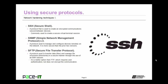First up is Secure Shell, or SSH. It's a protocol used to create an encrypted communications session between devices, commonly used to create a secure virtual terminal session. It should be used in place of Telnet whenever possible. Then there's SNMP version 3, Simple Network Management Protocol version 3. It's a protocol used to manage and configure devices remotely on the network, and it's more secure than the prior two versions because it supports encryption. Secure File Transfer Protocol, or SFTP, should always be used in place of FTP. It's a protocol used to transfer data and manage file structures in a secure manner through the use of an SSH session, and it encrypts the whole process.